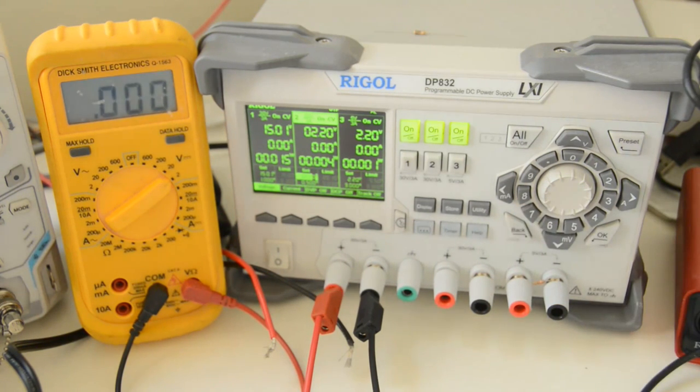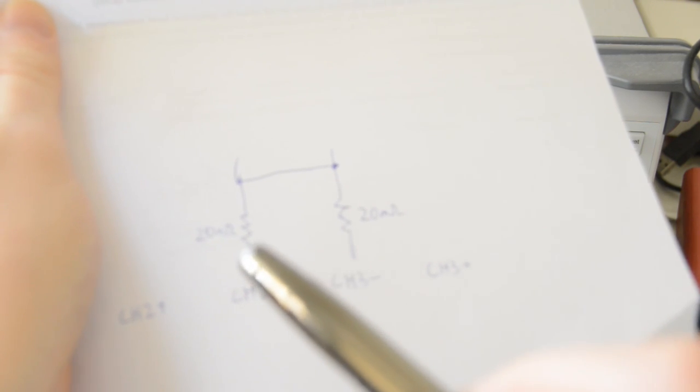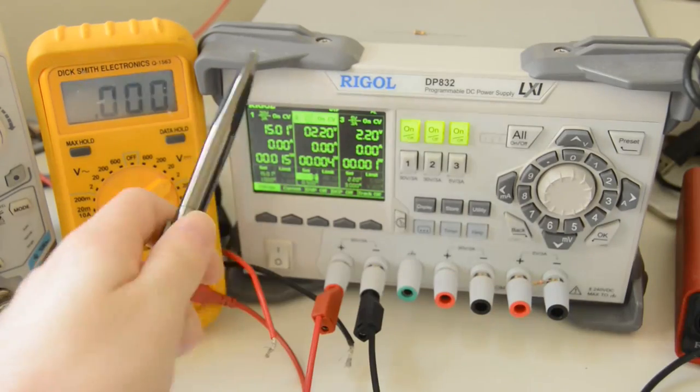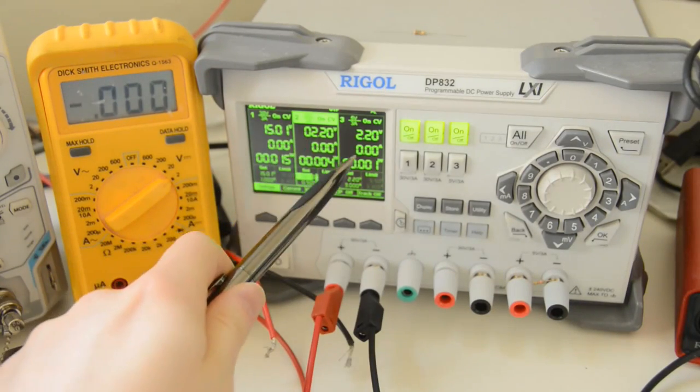So what happens if I now connect this resistor from channel 3 plus across to channel 2 minus? Well, we would expect the current to go through the channel 2 sense resistor. So I was fully 100%, especially after doing this test where I showed that the resistance between the two negative terminals was 40mΩ. So I was fully expecting the current through here to cause the current measurement to appear on channel 2 in the display, not channel 3.